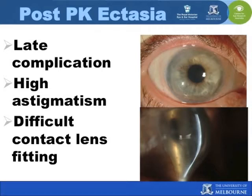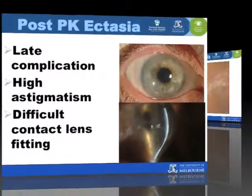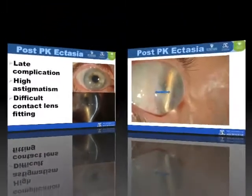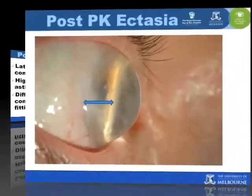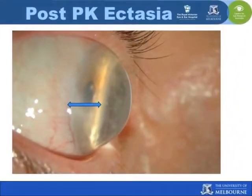Post-keratoplasty ectasia causes severe astigmatism and irregular corneal contour, subsequently making hard contact lens fitting very difficult in advanced cases. The ectasia and thinning in these cases may involve the donor, the graft-host junction, and the host tissue.